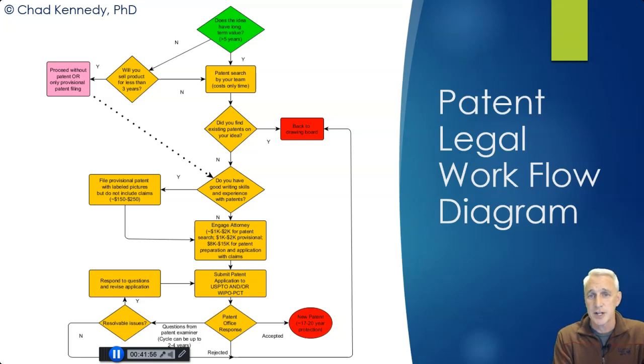So either one of those ways you can go down and eventually get to, do you have good writing skills and experience with patents? That's a very important question. If you've done it many times in the past and you know the game and you understand how the writing works, great. File provisional patent. Label your pictures. If you have all the tech and the expertise to do that, great. But do not include claims in this situation, then engage an attorney. Once you've done your provisional, you can engage an attorney at that point. Remember though, if you do find existing patents of your idea, you might have to go back to the drawing board to either tweak your idea or decide, okay, we've got to do something else.